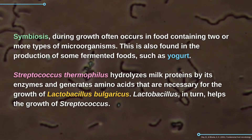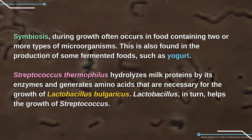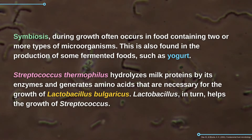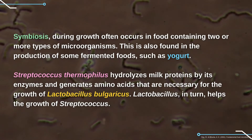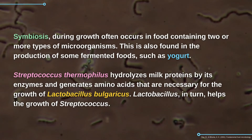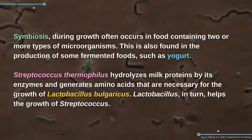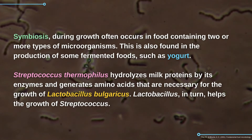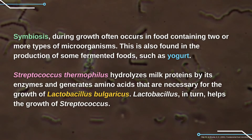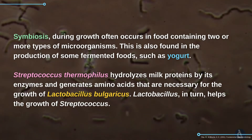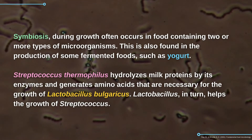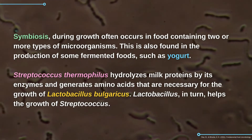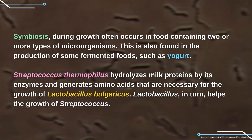Symbiosis during growth often occurs in food containing two or more types of microorganisms. This is also found in the production of fermented foods such as yogurt. Streptococcus thermophilus hydrolyzes milk proteins by its extracellular proteinases and generates amino acids necessary for the growth of Lactobacillus bulgaricus. Lactobacillus in turn produces formate, which stimulates the growth of Streptococcus species.